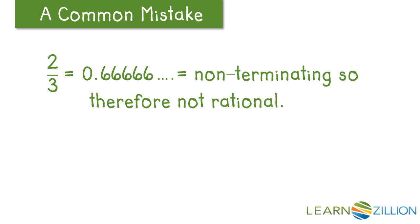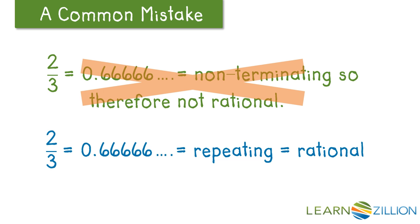Another misconception is that two-thirds equals 0.6666, and since it's non-terminating, we assume that it's not a rational number. And that's not true. Two-thirds repeats. It's 0.6666, and if a number repeats, it's considered to be rational still.